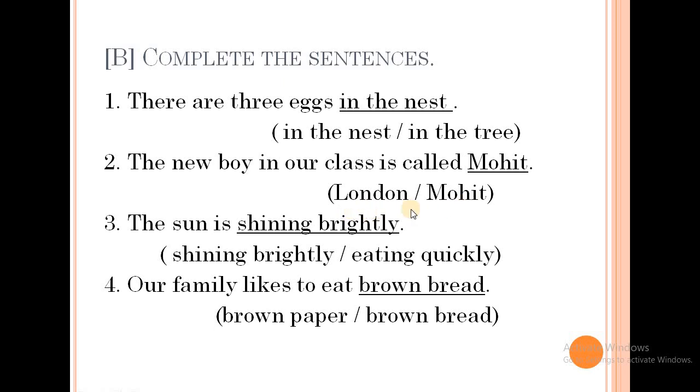Here in the options, it is given London and Mohit. As the new boy is there, the boy's name will be Mohit, not London. London is the name of the city, right? So the correct answer is Mohit.